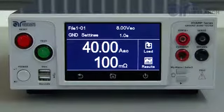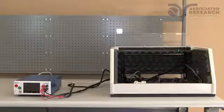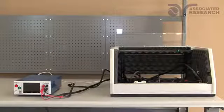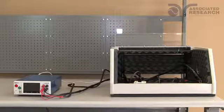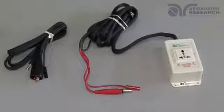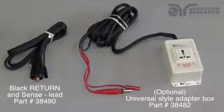Finally, we're going to show you how to connect the 3240 to a DUT and run the test sequence. For this demonstration, we're going to show you how to connect to a DUT using a universal style adapter box on a three prong product along with the return lead. You're going to need the following accessories: the black return incense lead and the universal style adapter box.